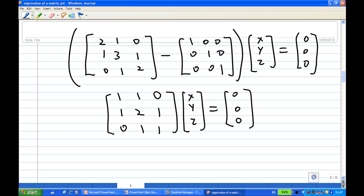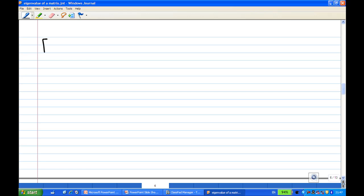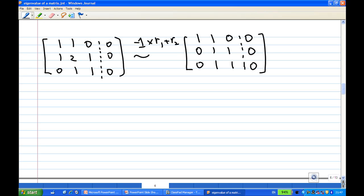After subtracting the matrix, I will get [1,1,0; 1,2,1; 0,1,1] multiply by [x,y,z] equal to [0,0,0]. So, to solve for x,y,z, we are going to do the row operation. Let's do the row operation by copying the left-hand side. I can take the first row times minus 1, add to the second row. I will get the first row [1,1,0,0], and the second row become [0,1,1,0], and the third row is [0,1,1,0].